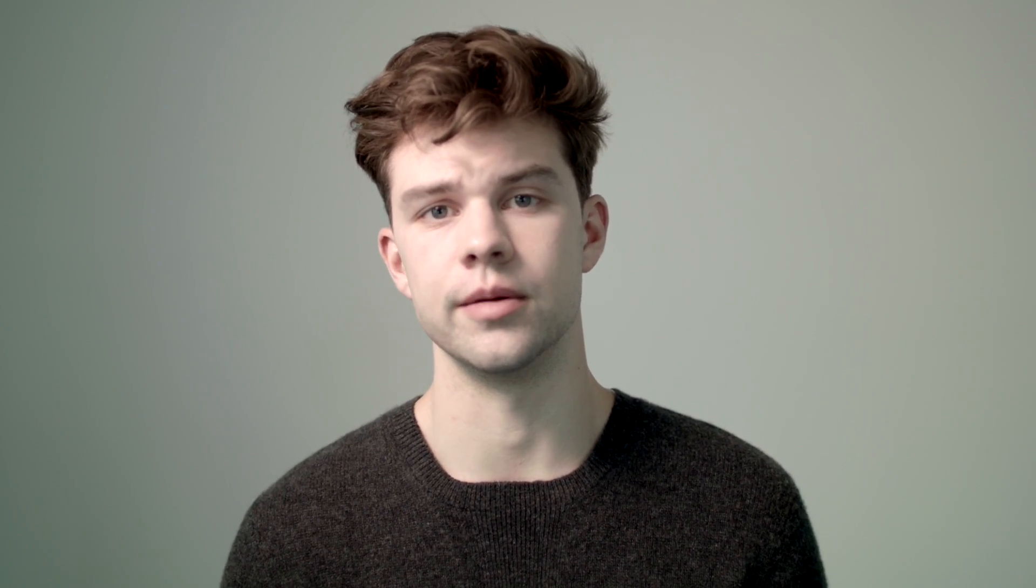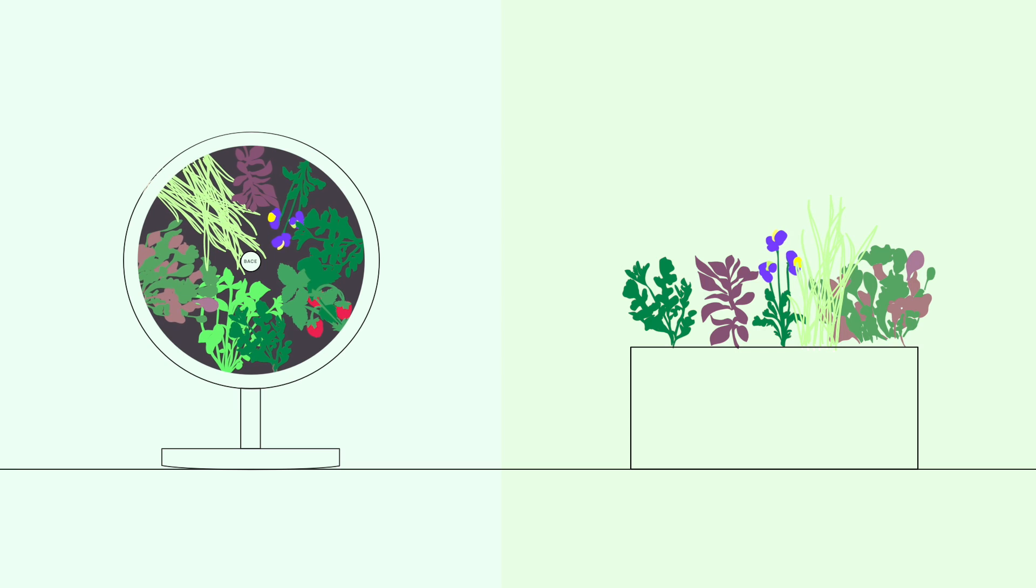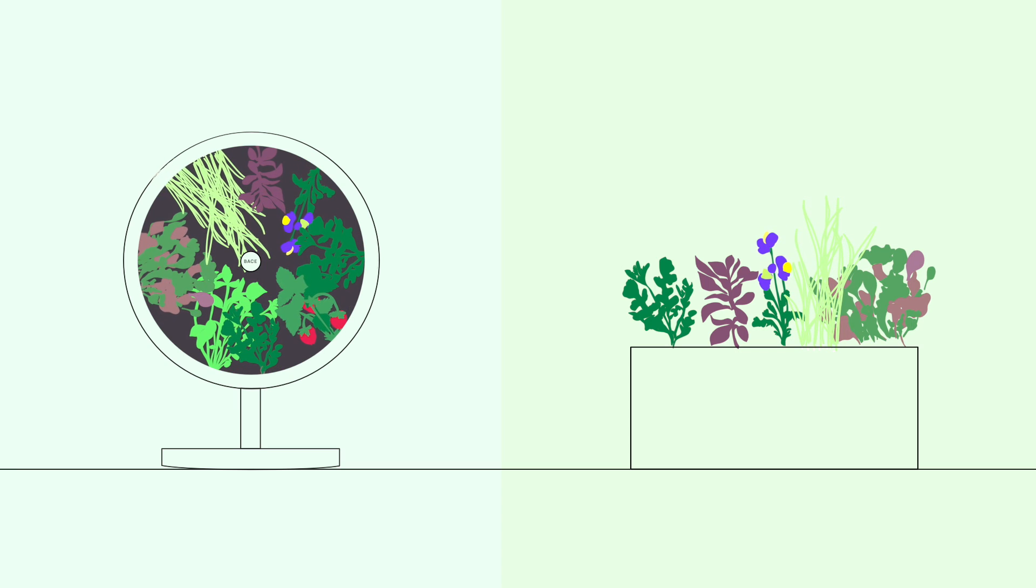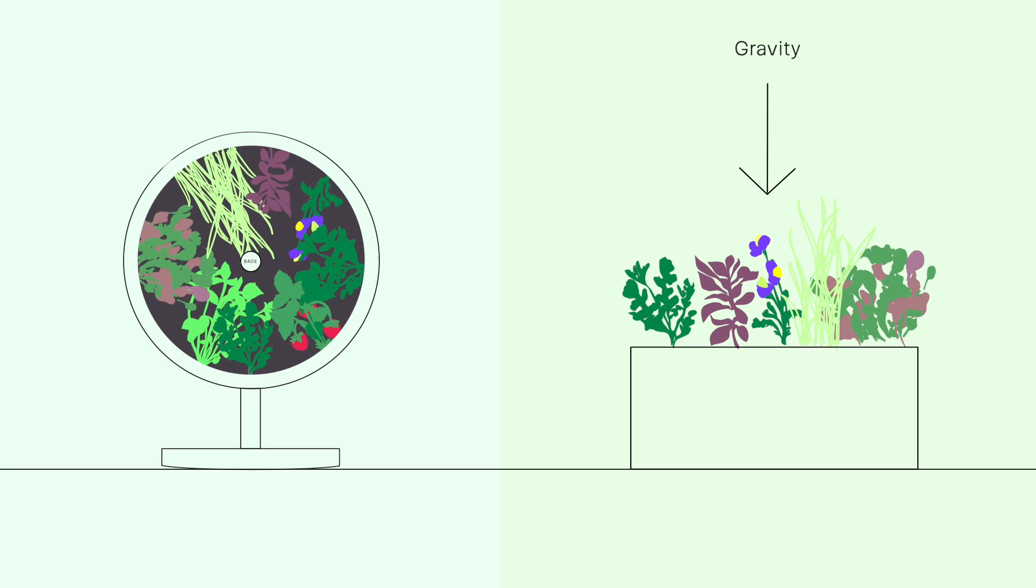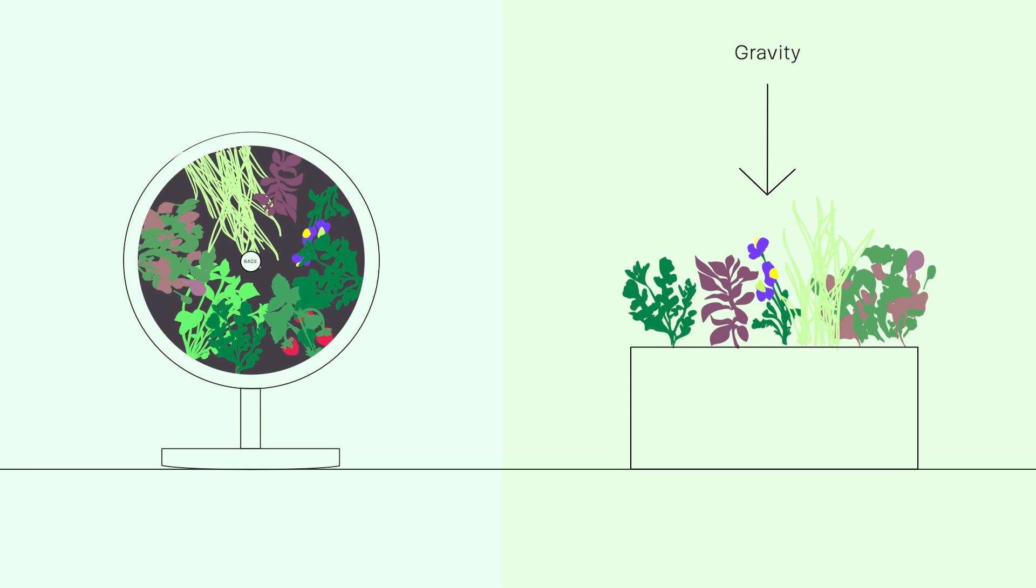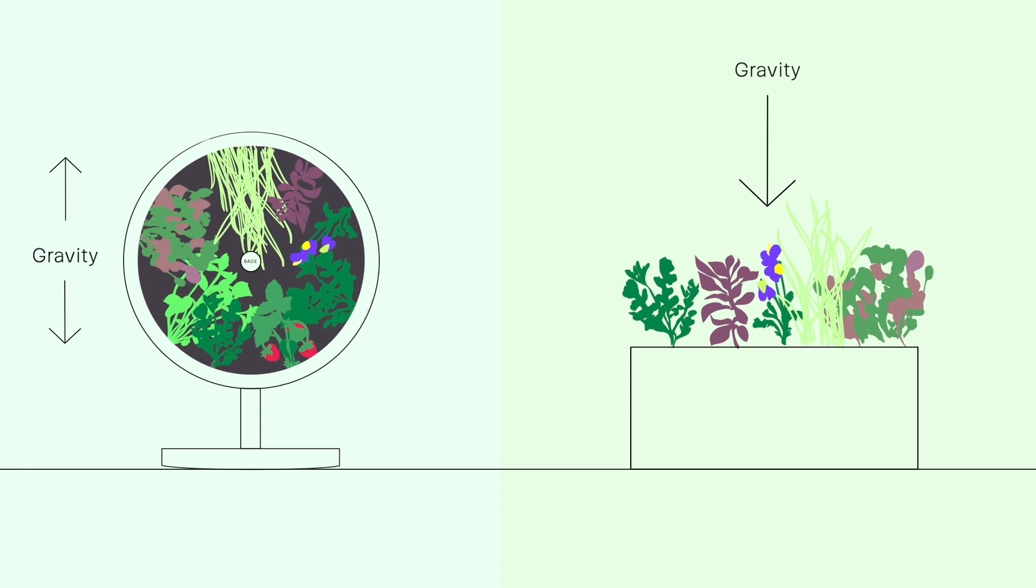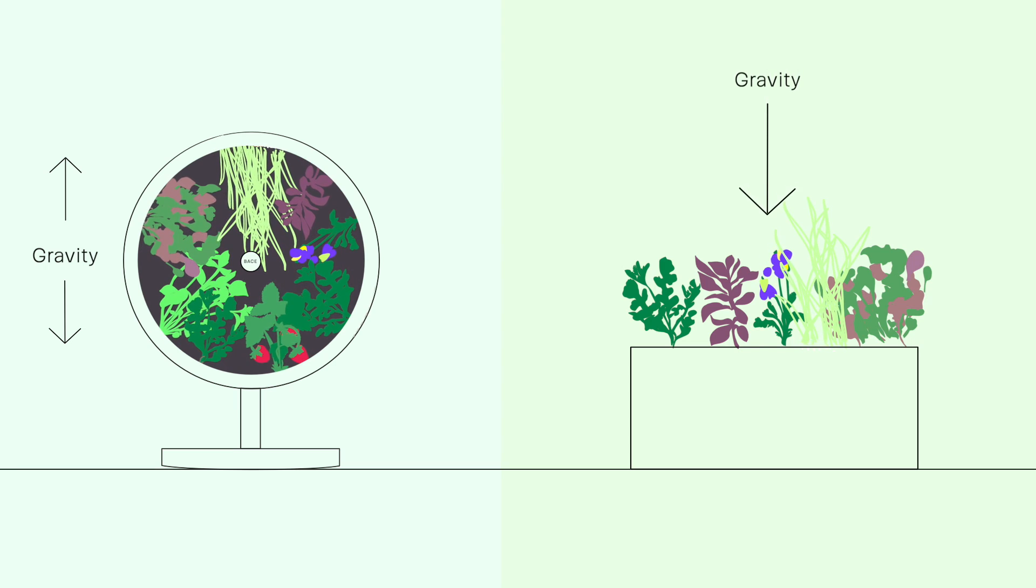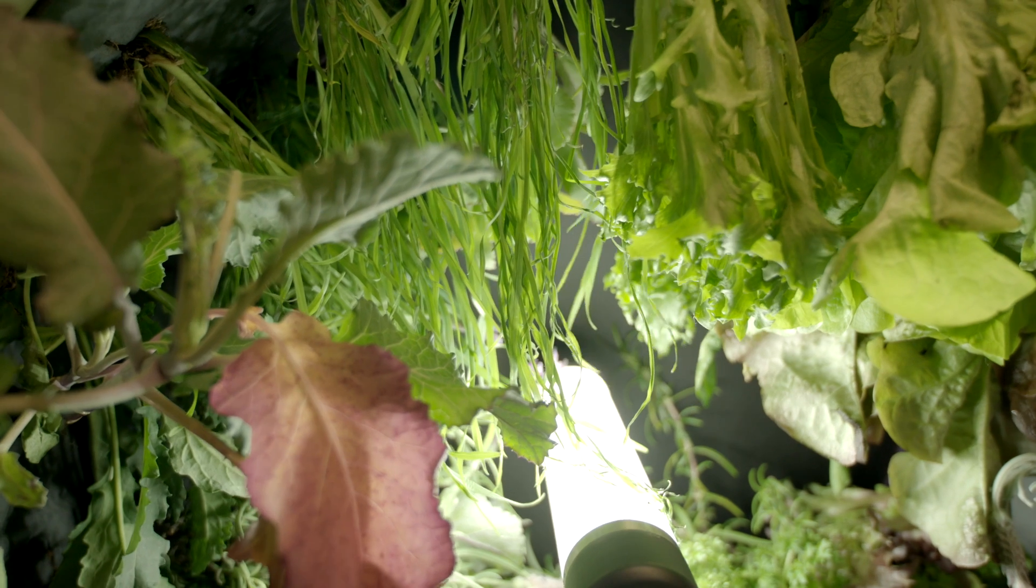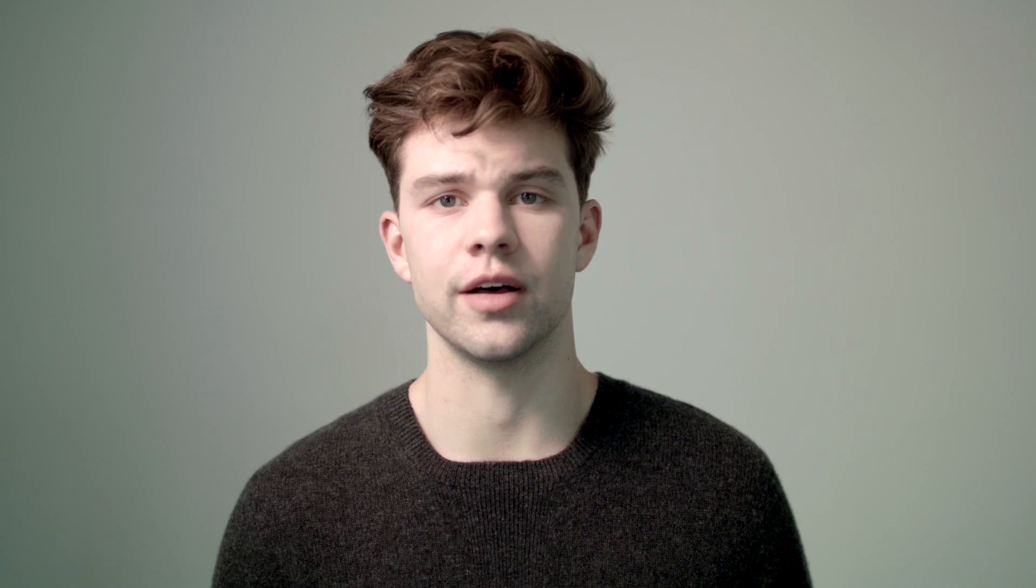Not only do we save space but we also save time. When it comes to the speed of plant growth, gravity is an enemy. As plants rotate along the farm bed, the total amount of gravitational pressure enacted on them is zero. This allows plants to grow freely up to twice as fast as an ordinary flat garden.